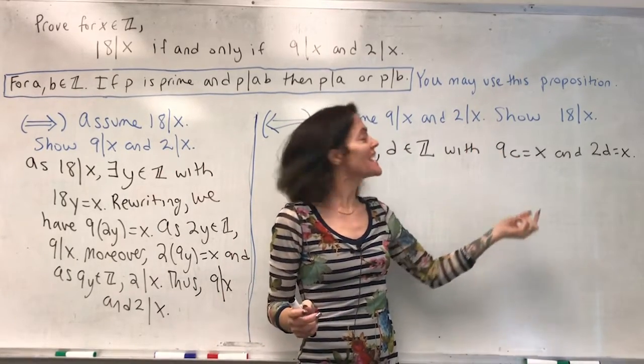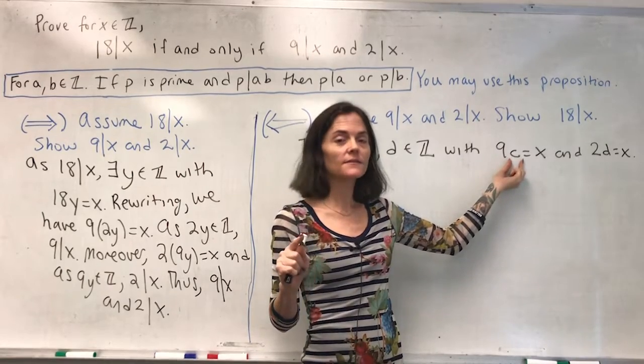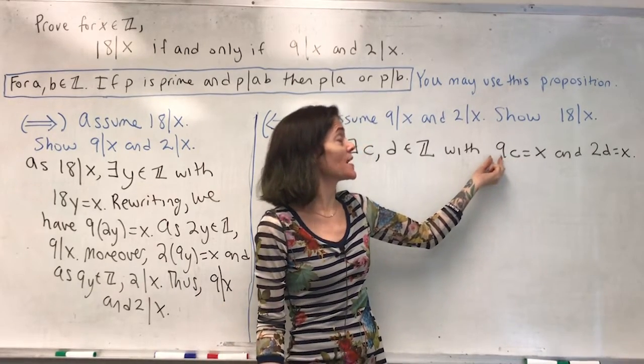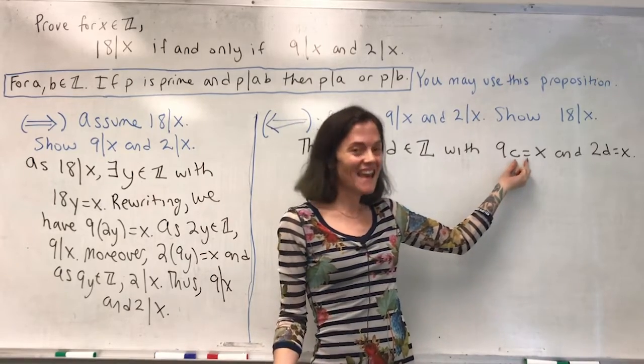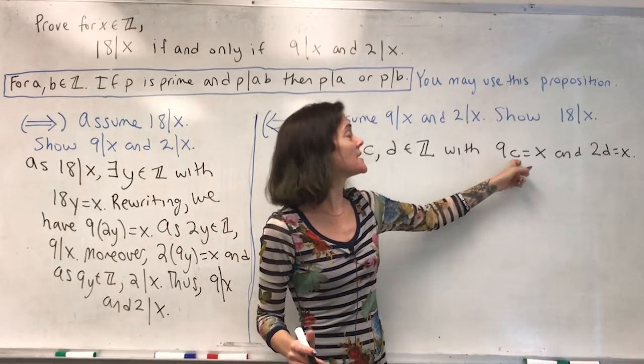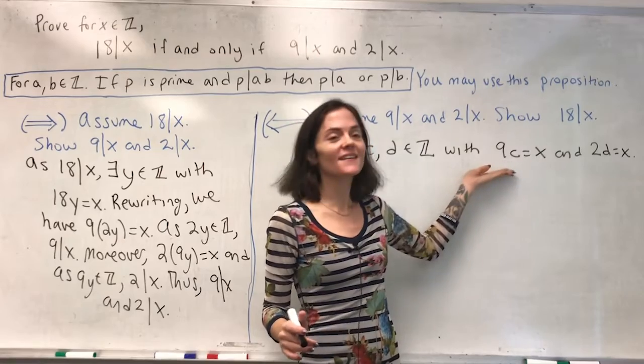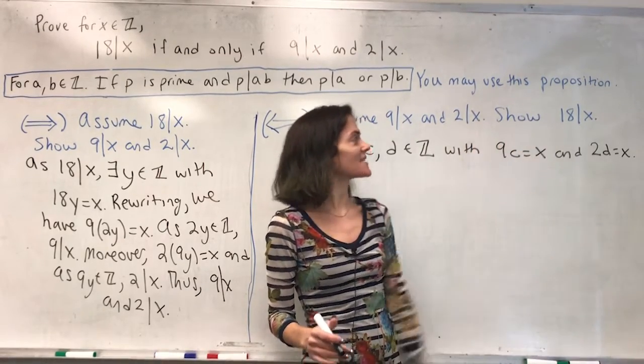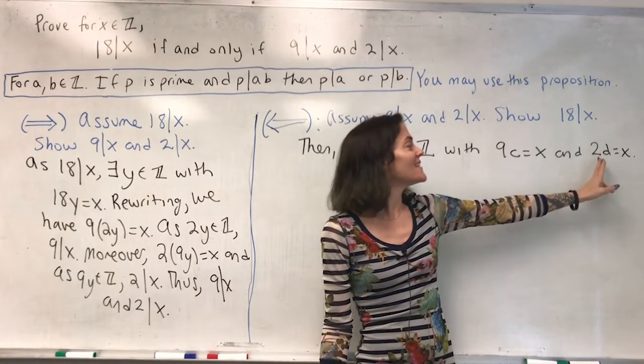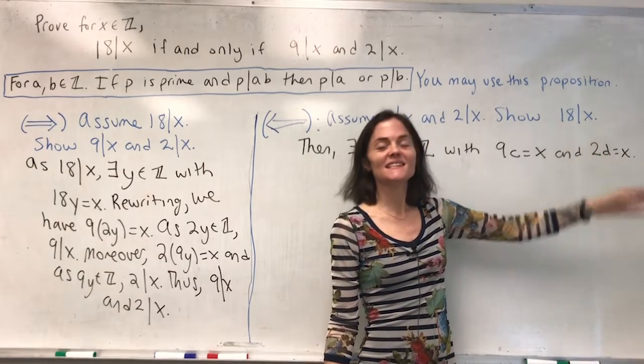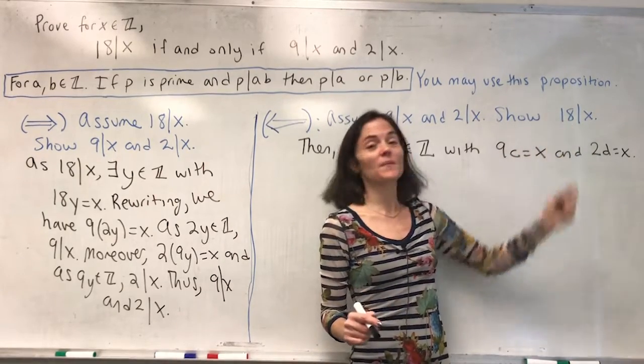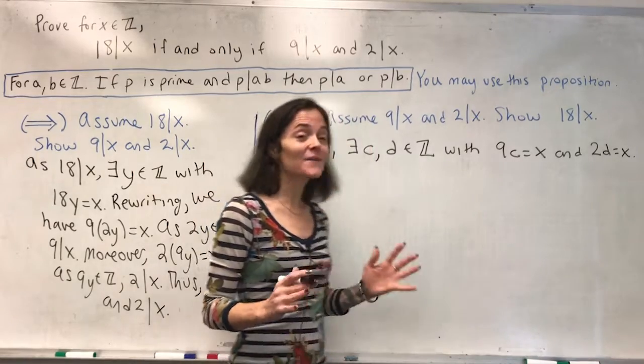If, for some reason, we can conclude that c is even, that would be - it's of the form 2k for some integer k. Then we would have 9 times 2 times k, where k is an integer, equals x. If this would be a goal of ours - if we can get c as an even number, then with this expression here, we can conclude that 18 divides x. Similarly, if you could show d is a multiple of 9, then you could argue that 18 divides x. But I'm going to work with this one, and I'm going to work to show that c is even, then we will be able to conclude 18 divides x.